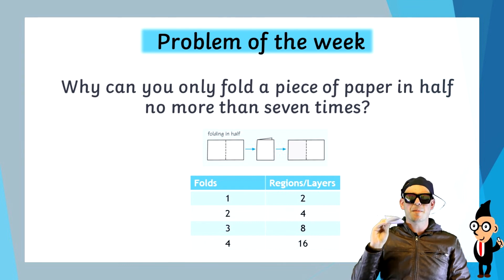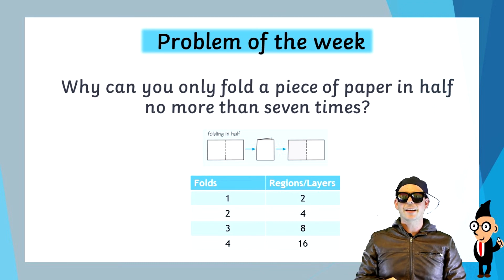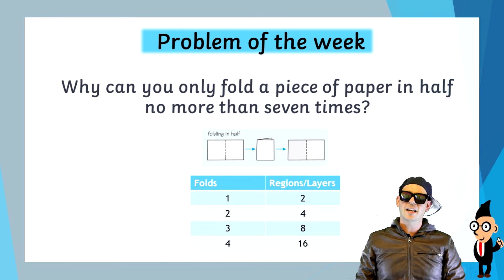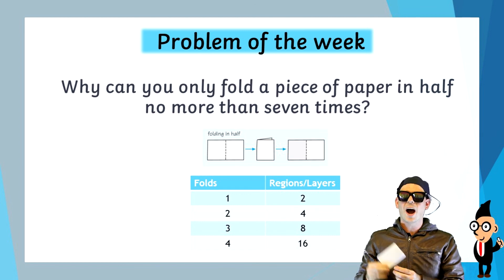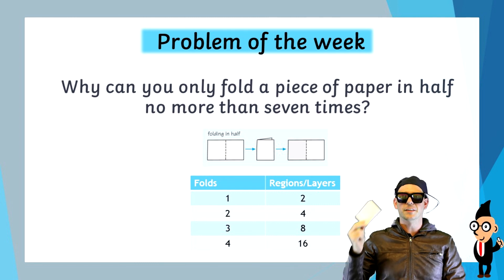So that mathematical pattern there is a hint. I would like you to investigate that pattern, continue that pattern. And maybe that pattern can help you answer the question: why can't you fold a piece of paper in half more than seven times?